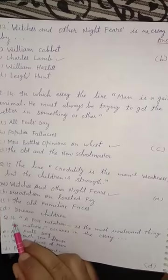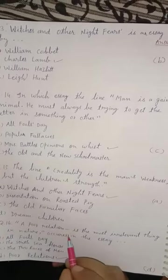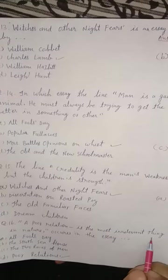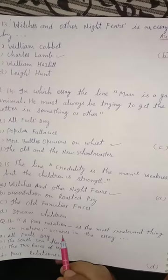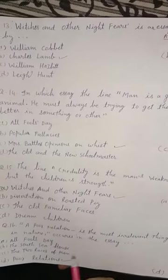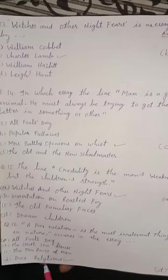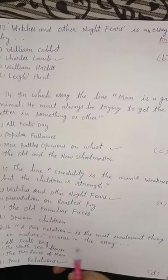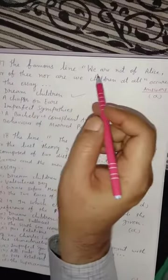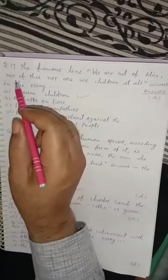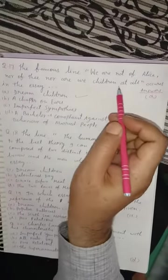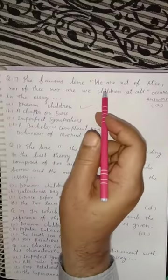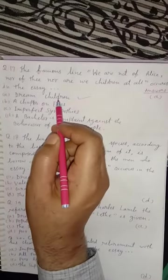Question 16. 'A poor relation is the most irrelevant thing in nature' occurs in the essay 'Poor Relations.' Option D is correct. This famous line is mentioned in 'Poor Relations.' Question 17. The famous line 'We are not of Alice, nor of thee, nor are we children at all' occurs in the famous essay 'Dream Children.' Option A is correct.